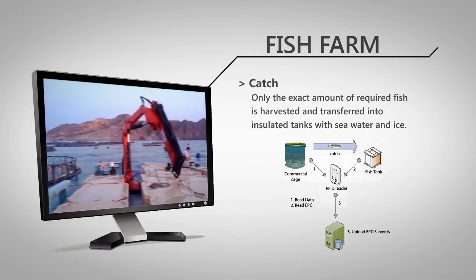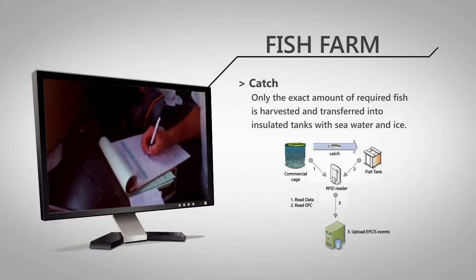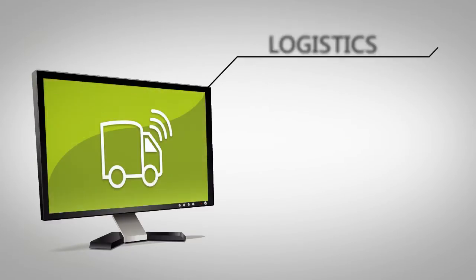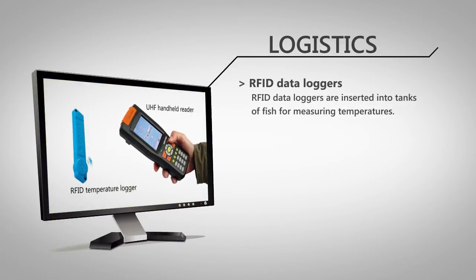Once all the information of the processes is collected, it is stored in an EPCIS repository. An RFID data logger is inserted into the tank to monitor the temperature during transportation.